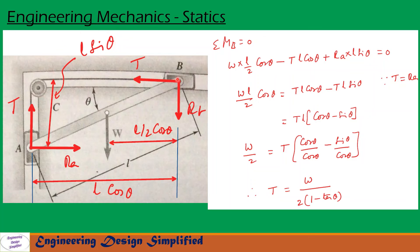Let us take moments about B. Sigma MB = 0. The moment due to W is W × L/2 cos theta minus moment due to T, which is T × L cos theta. Minus is because W produces counterclockwise moment and T produces clockwise moment. Plus, since RA produces counterclockwise moment, the moment due to RA is RA × L sin theta. This equals 0.